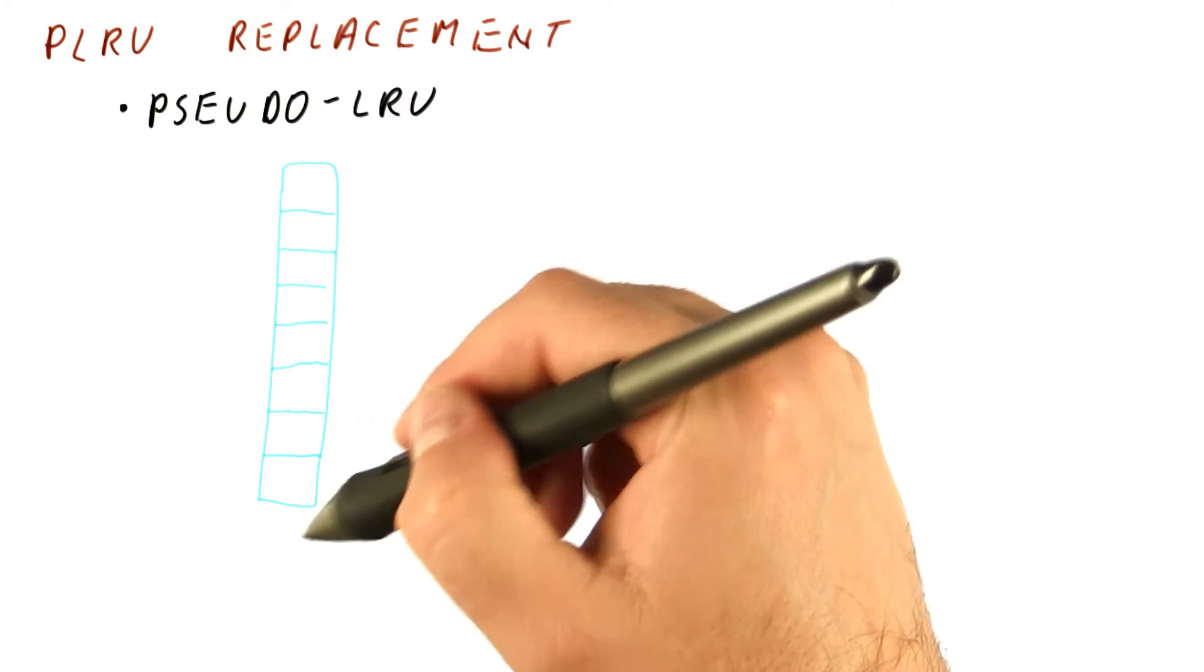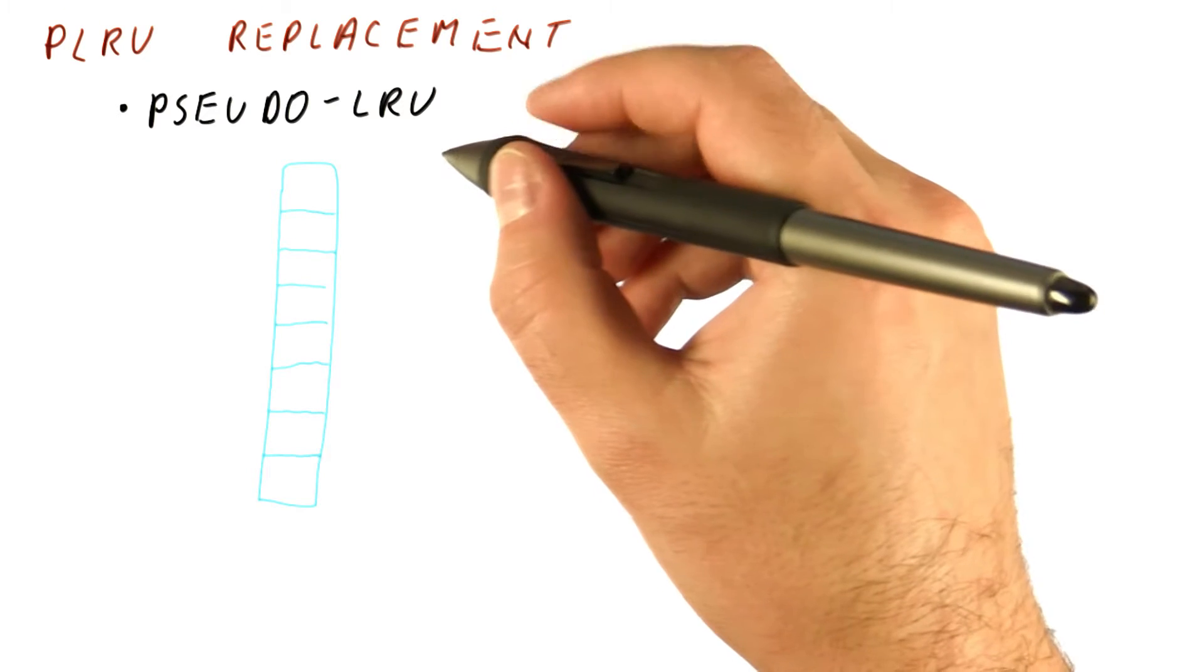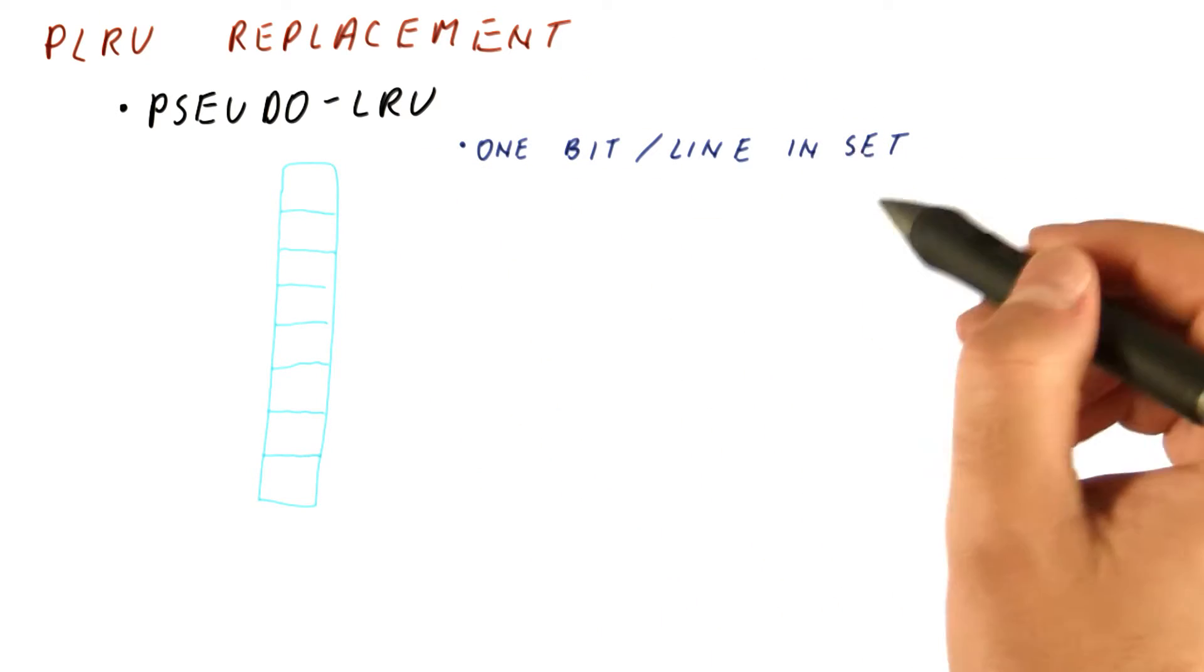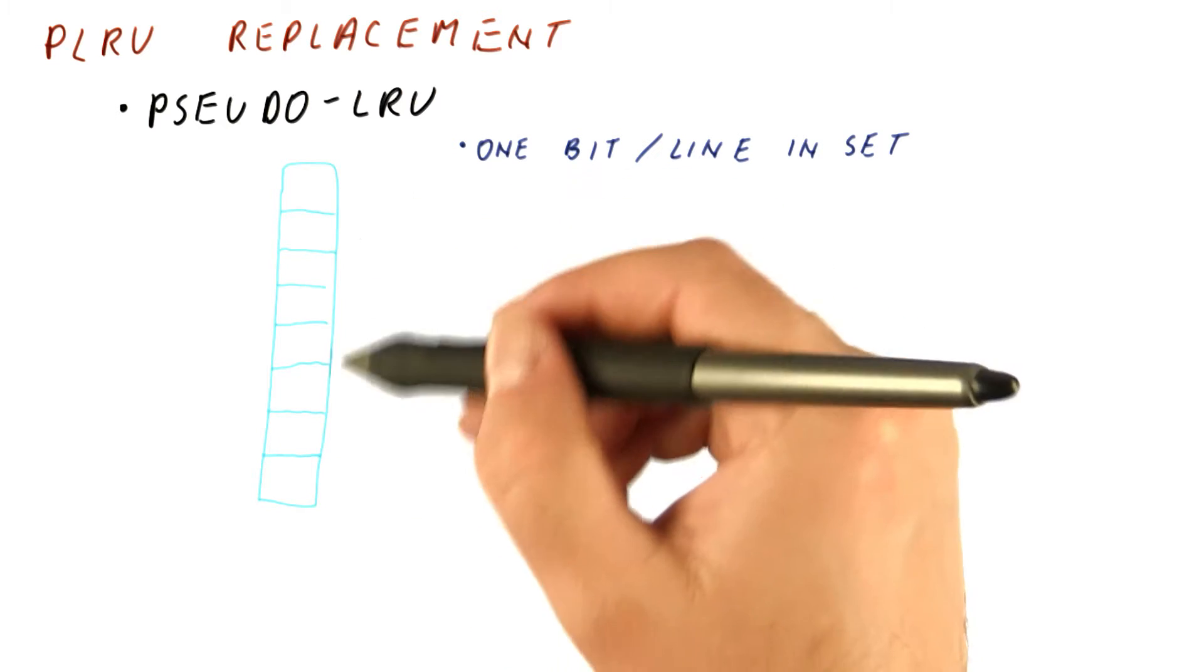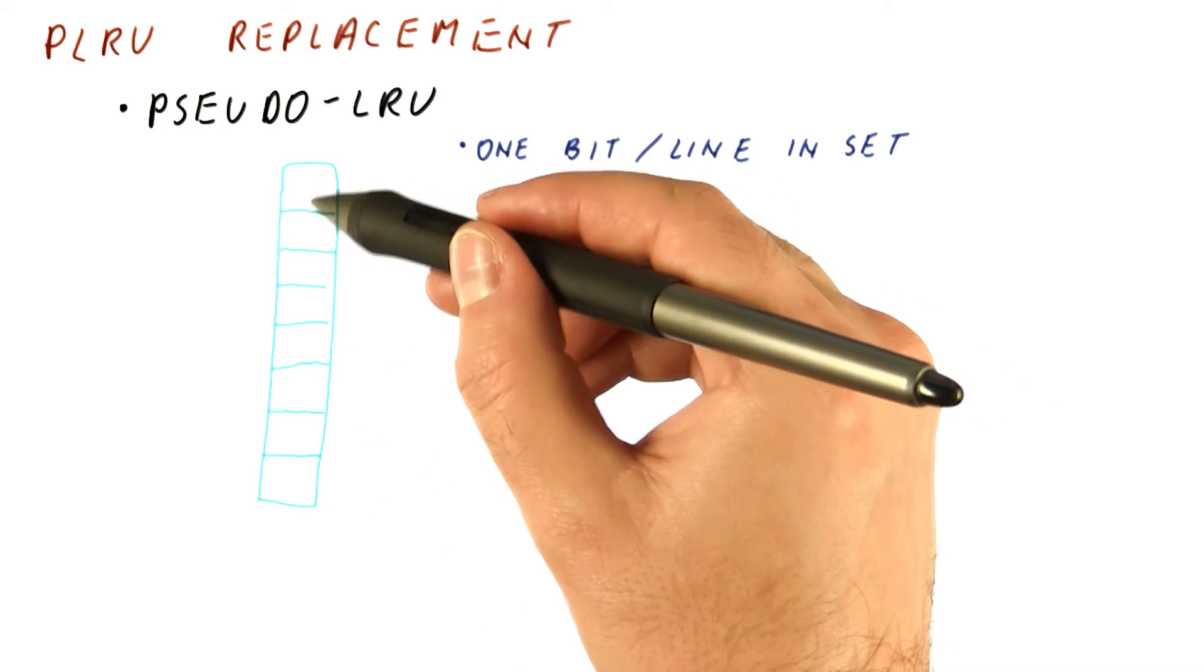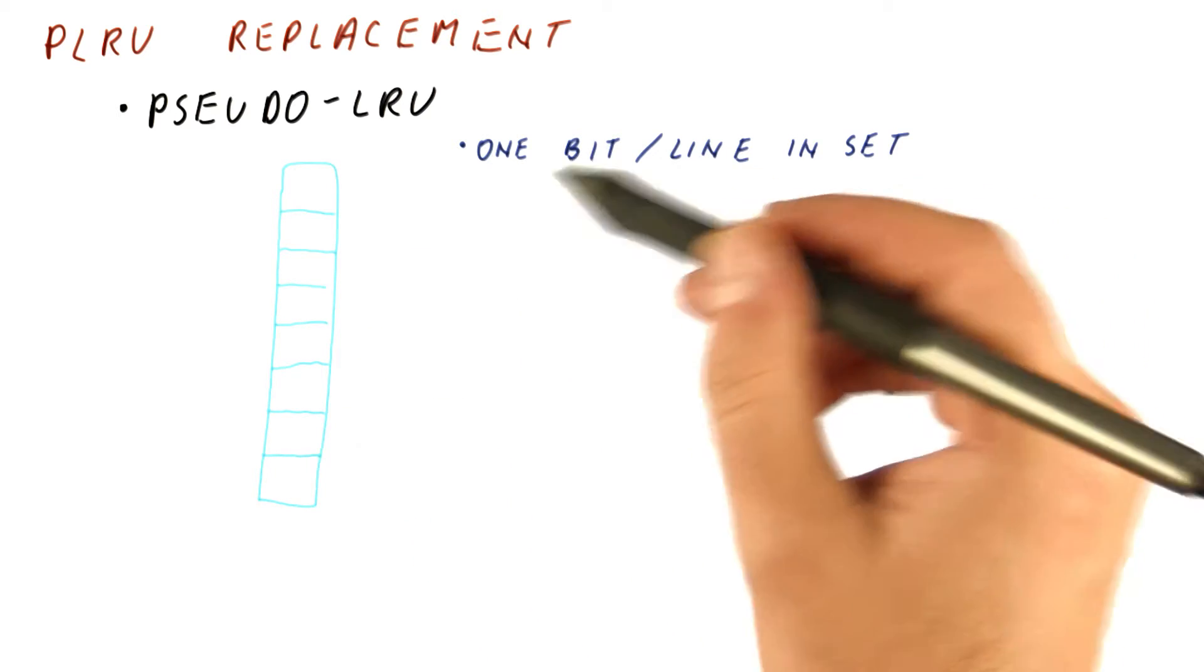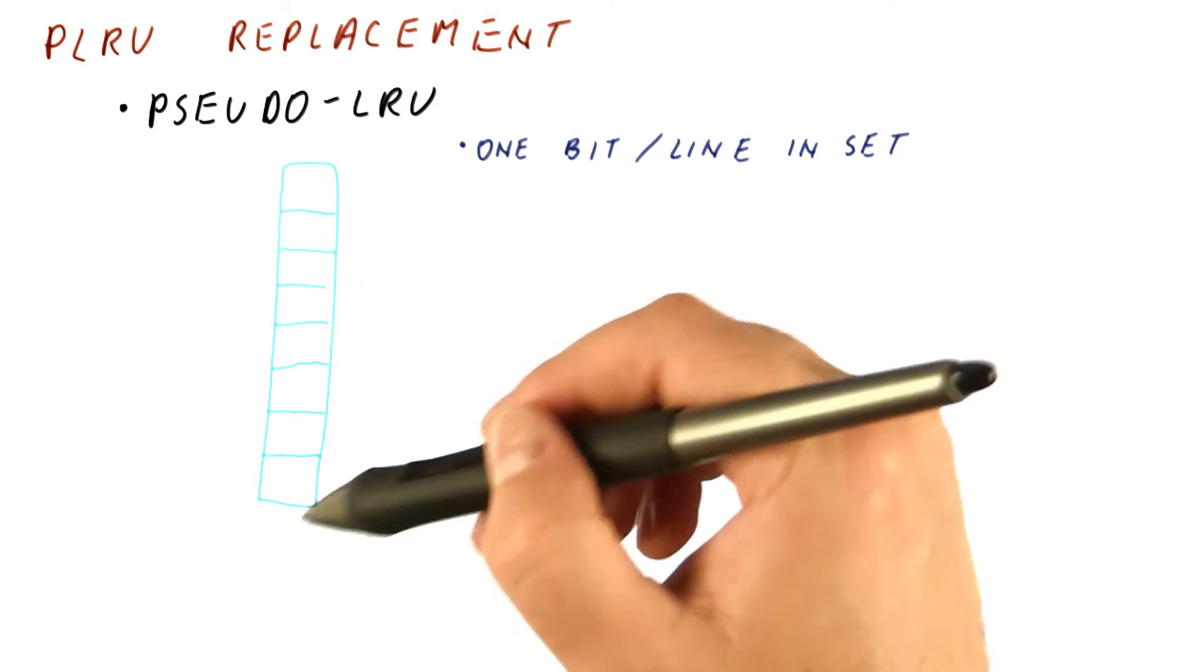Let's look at an eight-way set associative cache. With the pseudo-LRU policy, what we keep is one bit per line in the set. In an eight-way set associative cache, we will have one bit associated with each line, as opposed to three bits that we would need for LRU counters.